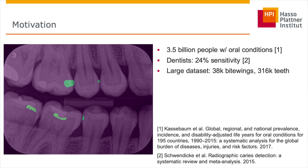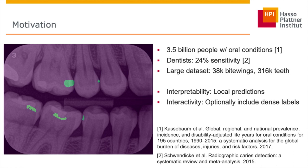In this work, we attempt to detect such lesions automatically and conduct a study on a large-scale clinical dataset of 38,000 bitewings. We propose a weakly supervised deep multiple instance learning architecture that is interpretable by classifying local image patches. At the same time, we allow for the inclusion of dense segmentation labels, which in practice might be obtained for difficult cases in an interactive setting.